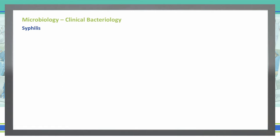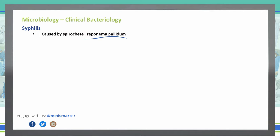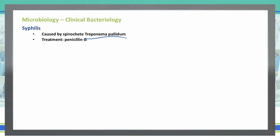Our third spirochete is syphilis. Spirochetes are gram negative, and syphilis is caused by Treponema pallidum. The treatment is penicillin G — very simple and straightforward. The big key is recognizing it early before it becomes more disseminated.